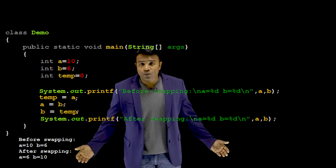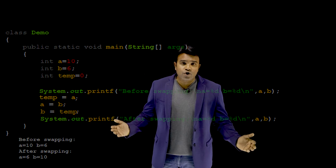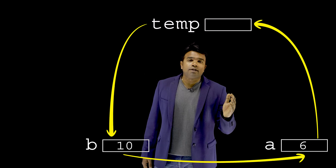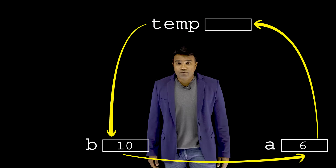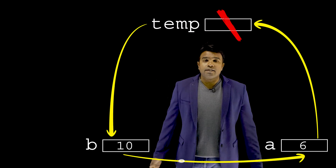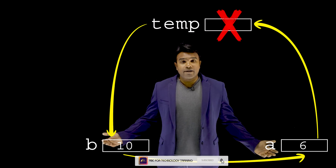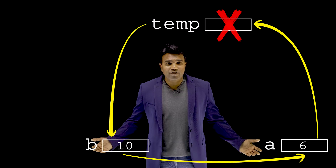However, in companies, what is normally asked of a job aspirant is to swap without using a third variable — which means swapping without using the temporary variable. How can we achieve it? I'll tell you — watch my next video.